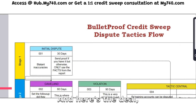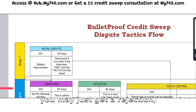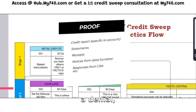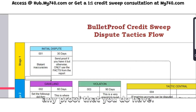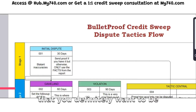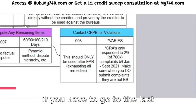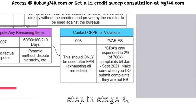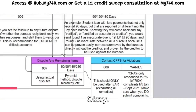You want to send proof if you have it, because otherwise you may just get a rejection, a denial, or a 'verified and certified as accurate by the creditor.' Any proof you have — while it may not be looked at — you definitely want to be logging these things, because if you have to go to stage four and contact the CFPB, you need a log of all of this.